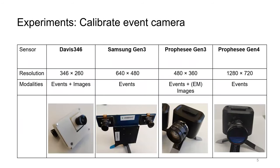We now compare our approach with previously used baselines for calibration. Here, we use four different event camera sensors: the Davis 346, Samsung Gen3, Prophecy Gen3 ATIS, and Prophecy Gen4. These sensors cover a wide range of camera resolutions and distortions.